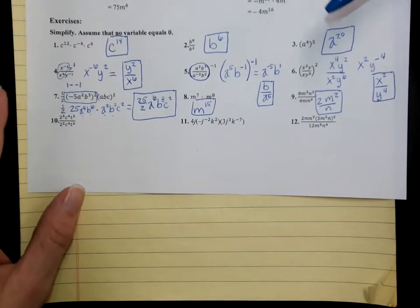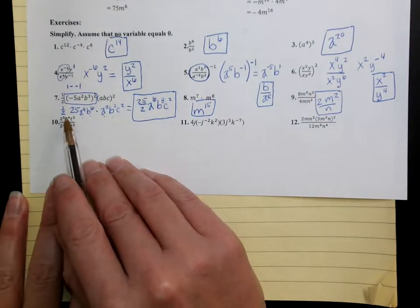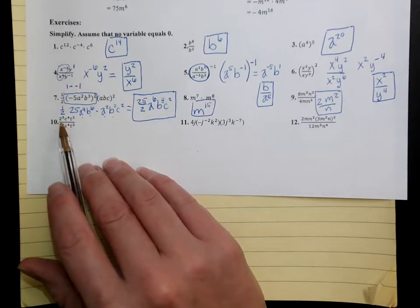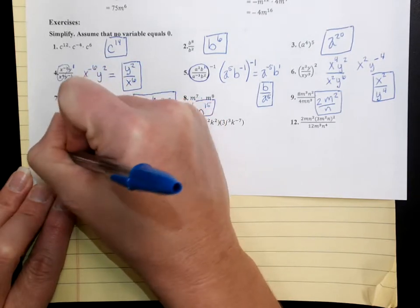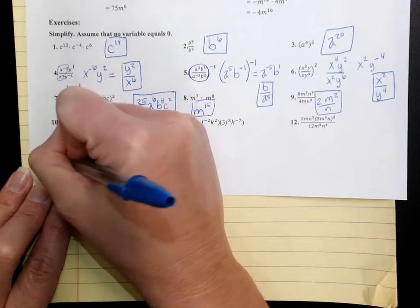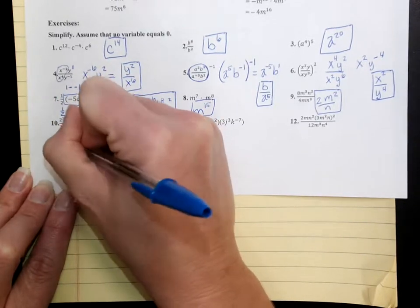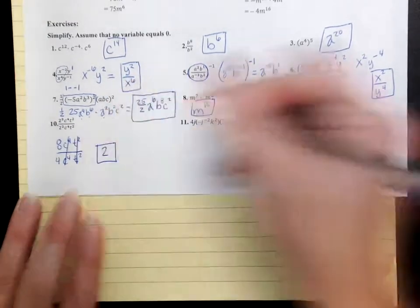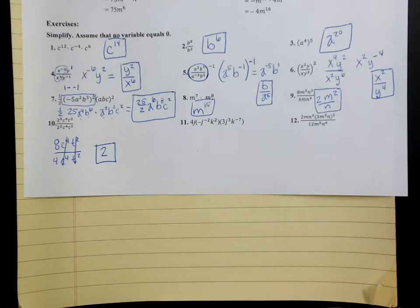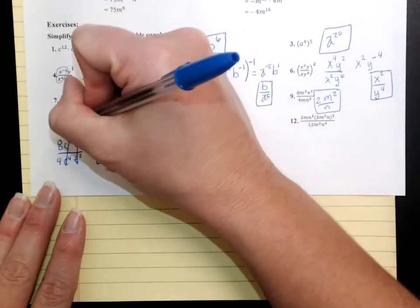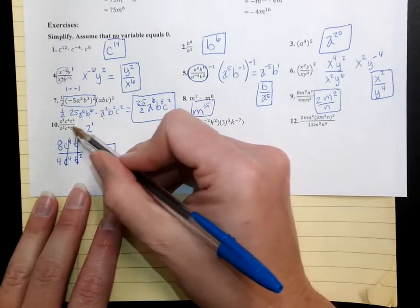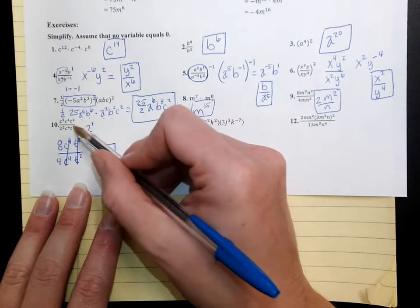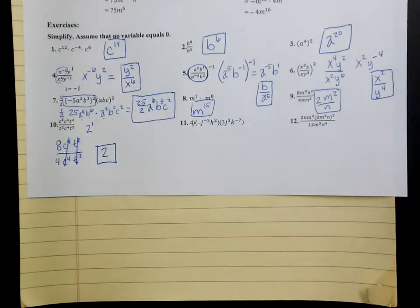Question number 10 — a little problem here. Be sure you actually cube the 2. That's not 2 times 3 — that's 2 times 2 times 2, which is 8. So that's 8 times c to the 4th over 2 squared times c to the 4th times t squared. Those cancel and those cancel. 8 divided by 4 is just 2. Another way you could have done this is subtracting your exponents from the beginning: 2 to the 3rd divided by 2 squared gives 2 to the 1st. c to the 4th minus 4 is 0, so there's no c's. No t's either. 2 to the 1st is just 2. Two different ways you could have worked that one.